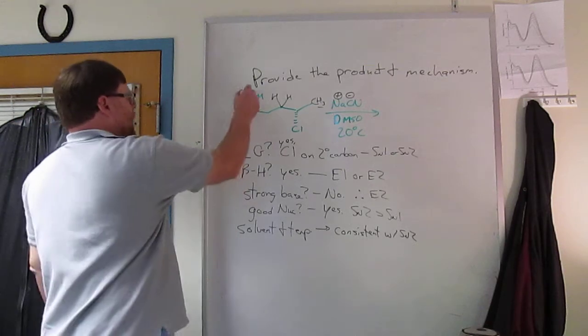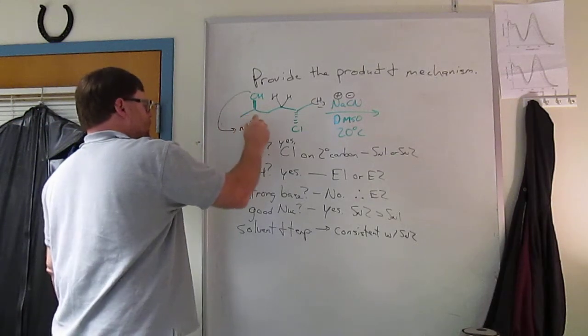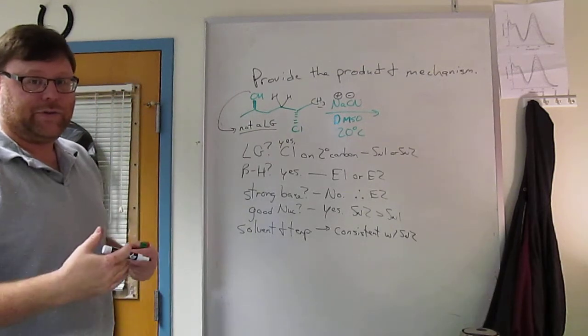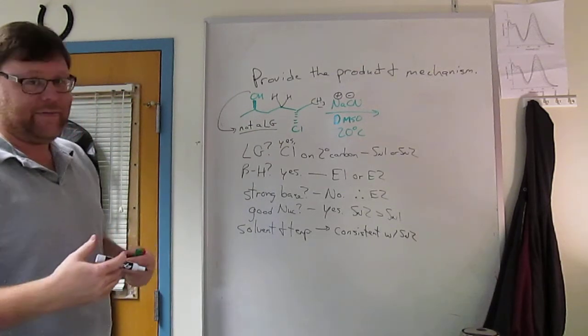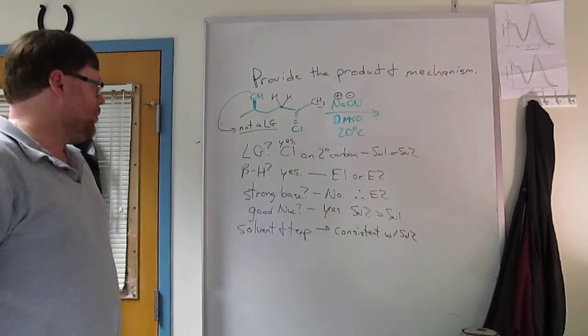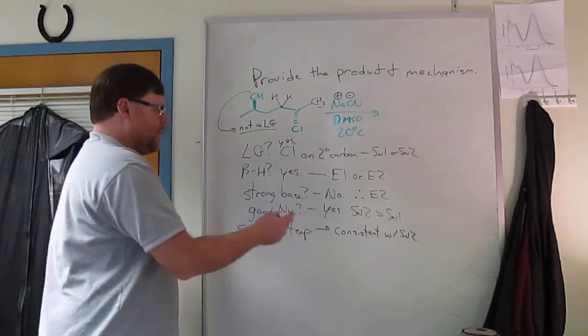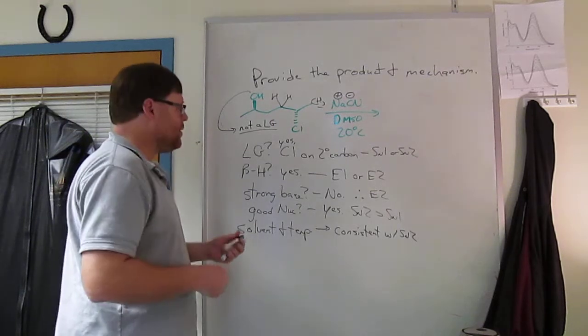What about this alcohol? So this is not a leaving group. Again, if you haven't seen it, there's a little video tutorial on OHs as leaving groups. I suggest you watch that. So alcohols are not leaving groups. So we're left with an SN2 mechanism. So what's the product going to be?